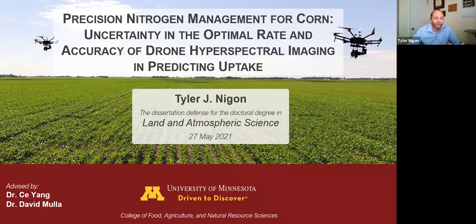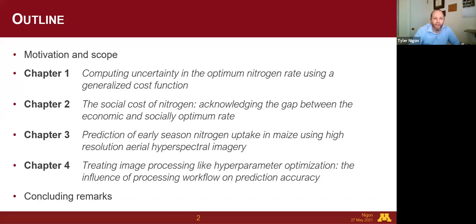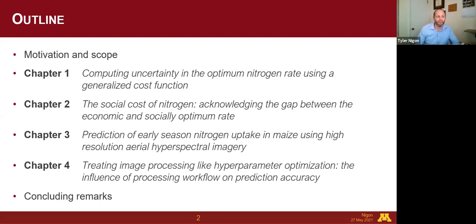I'd like to start by thanking my two advisors, Dr. Si Yang and David Muller. Today I have four research chapters to talk about. Chapters one and two focus on the economic optimum nitrogen rate, uncertainty, and some social costs. Whereas chapters three and four have the remote sensing aspects, using hyperspectral aerial imagery to predict nitrogen uptake. I'm going to focus more on three and four, but I do want to present some results from each chapter so there's something for everyone here.